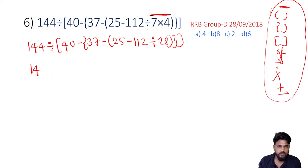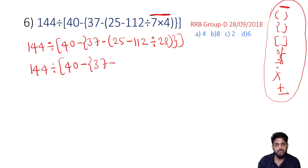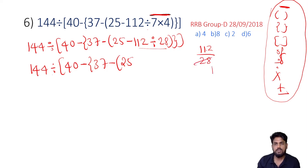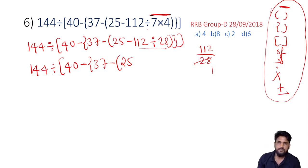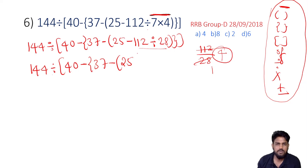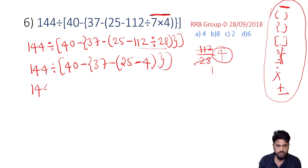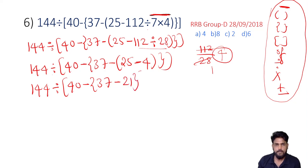This is 28. 144 times 144 divided by 40 minus 37 minus 25. This is minus 1 to 1. 12 divided by 28, 28 and 28. 28, 38, 39, 40, 40, 40, 45. 44. 40. 40 minus 37 minus 25 minus 4 is 21. 21.